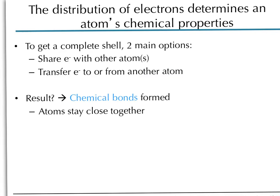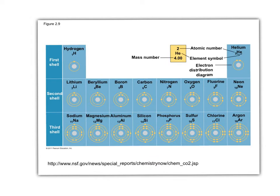How do we fill these shells? There are really two main ways. You can either share electrons with other atoms—some of the time the electron is around one atom, some of the time around the other atom, and that will count. Or you can completely transfer electrons from one atom to another. Both the sharing or transfer result in chemical bonds, which is how you make atoms stay close together. Looking at the periodic table, the far right column are noble gases. They do not react and aren't going to form bonds because they're already full. All other atoms are going to either lose, gain, or share electrons to make their outer shell full.